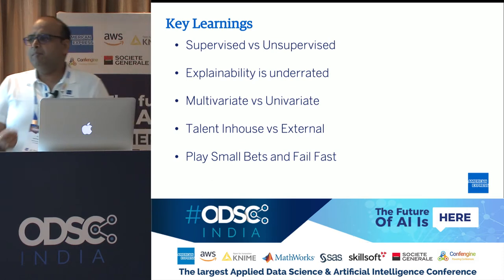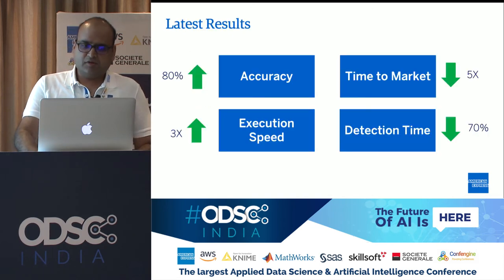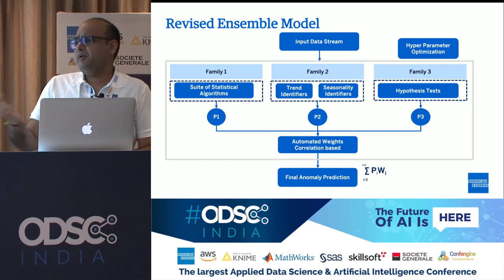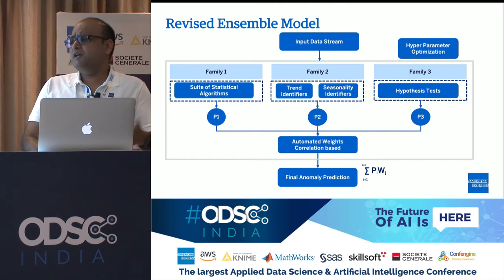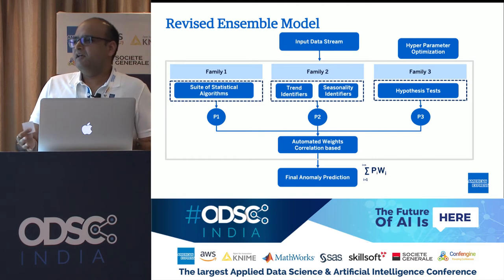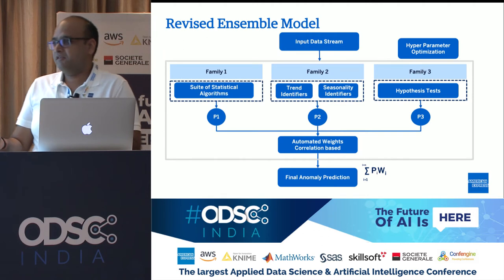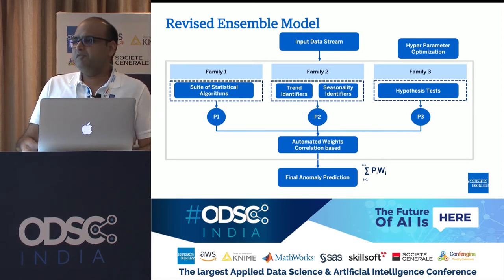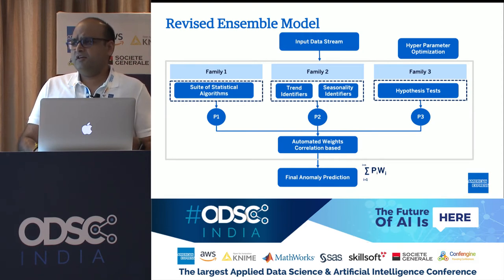We are using a family of algorithms for each of these models. Right now we are actually filing a patent on this, so we can't disclose exactly which particular algorithms we're using. But I can give examples: for a statistical function, EWMA is giving us very good results. For trends and seasonality, double exponential smoothing is also working well. For hypothesis testing, something like the Grubbs test is giving us good insight into whether the behavior is normal or not. These are just a few examples — there is a series of models we're working through, and this is a constant journey. We are learning and applying things every now and then.